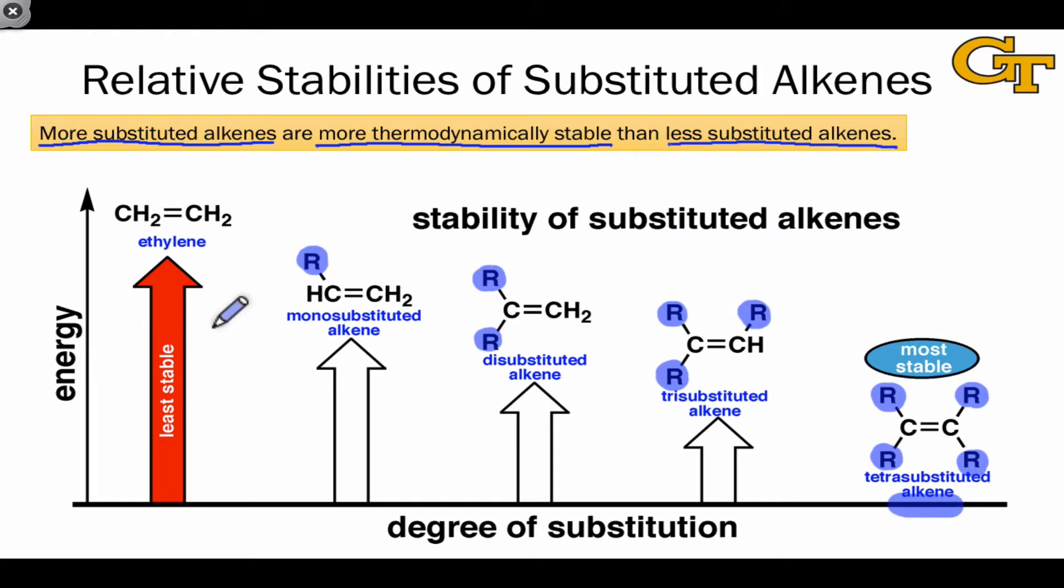You can imagine then that thermodynamically, if we came down to a reaction that was thermodynamically controlled, more substituted alkenes would be formed in preference to less substituted alkenes. If two competing reaction pathways—for example, two eliminations—could form either a monosubstituted alkene or a trisubstituted alkene, the pathway that yields the trisubstituted alkene would be favored, at the very least at long reaction times and high temperatures, which is the norm for base-promoted elimination reactions.